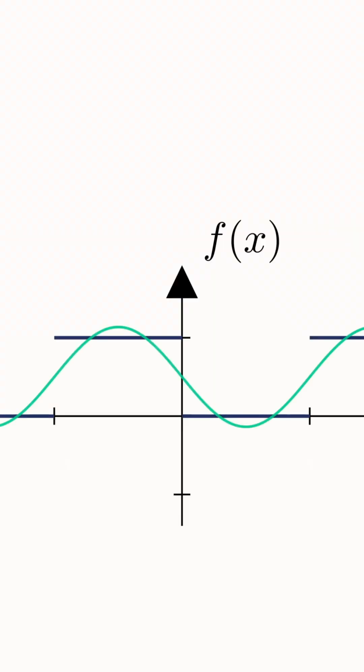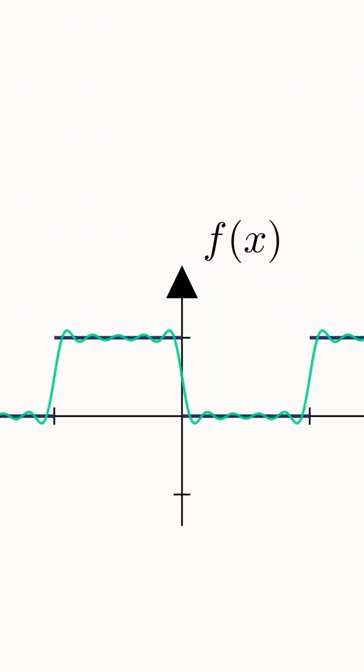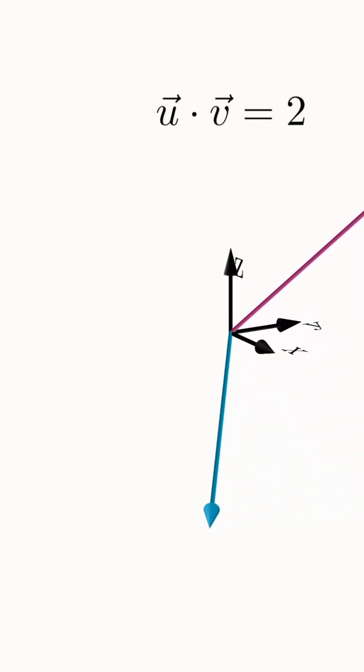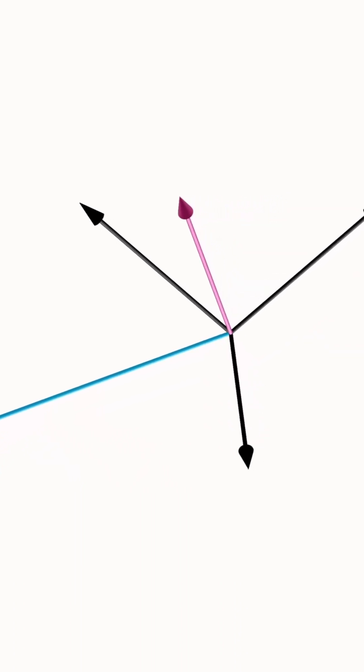Hilbert space came from Fourier's theory, which sees heat as subjective waves that are open-ended arrows in space as a Fourier series. The problem began when Riemann made these arrows objective through the Riemann integral, which becomes the dot product in Hilbert space.